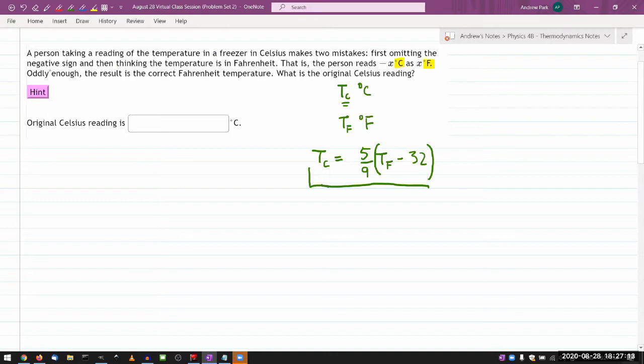First, omitting the negative sign. And two, thinking that temperatures in Fahrenheit. So I guess the number that's given is this, but they think it's this. So he says, oddly enough, the result is the correct Fahrenheit temperature. What is the original Celsius reading?